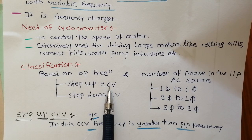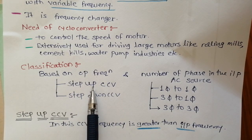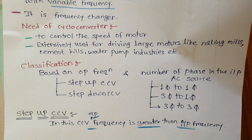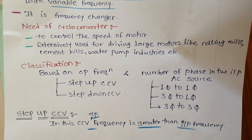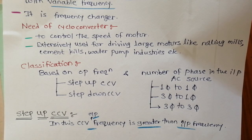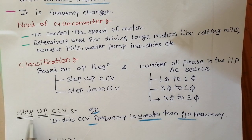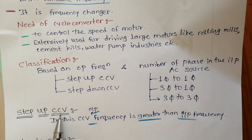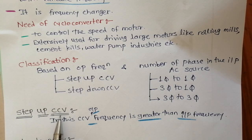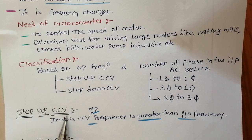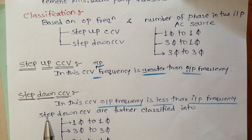The step-up cycloconverter has an output frequency greater than the input frequency, but it is not used practically because in India the frequency is restricted to 50 Hz. Using a step-up cycloconverter requires forced commutation, which makes the circuit complex. That's why step-up cycloconverters are generally skipped in practice.